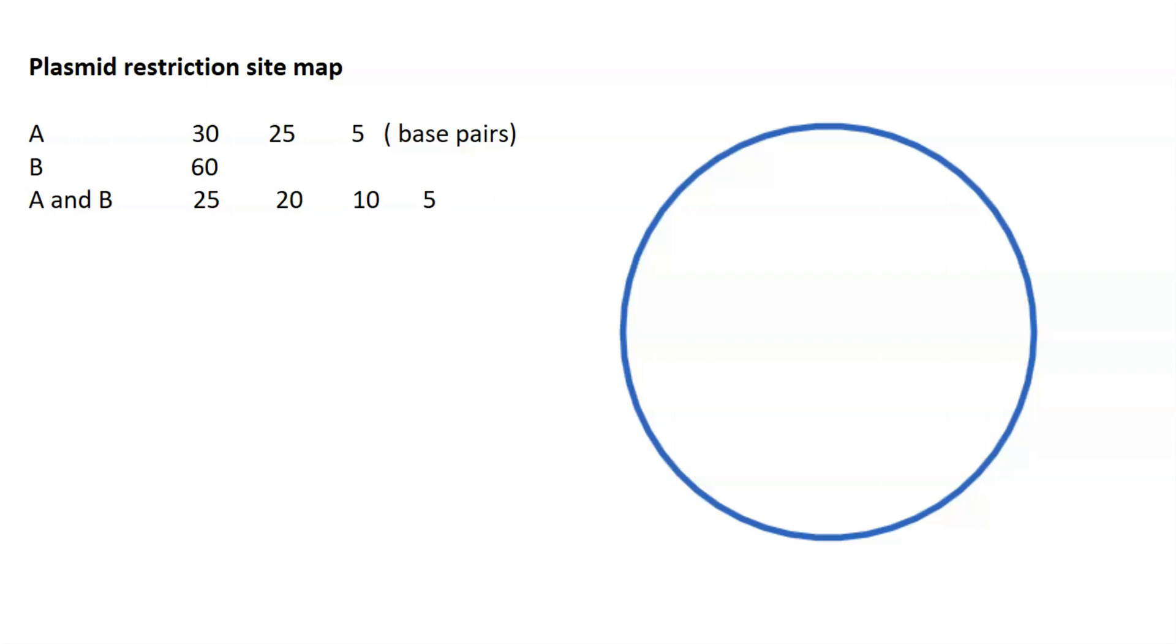Now in this example, plasmid DNA was digested by enzyme A, and then in another tube, this plasmid DNA was digested by enzyme B. In the third tube, we have digestion of this plasmid DNA by both enzymes together. We call that double digestion.